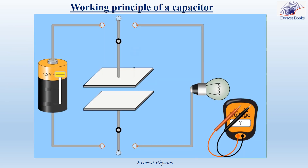This experimental simulation explains the working principle of a capacitor. A capacitor is formed of two conducting surfaces facing each other and separated by an insulating material. In this simulation, the insulating material is air. Initially, on each plate the number of electrons is equal to the number of protons, so each plate is neutral and the capacitor is uncharged.